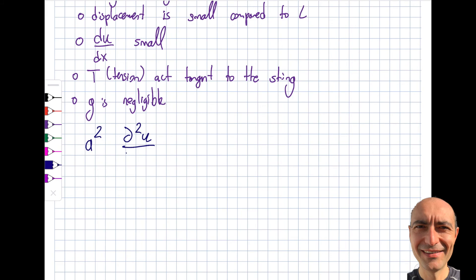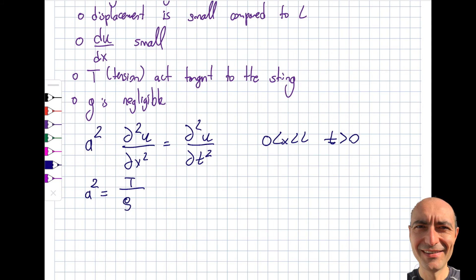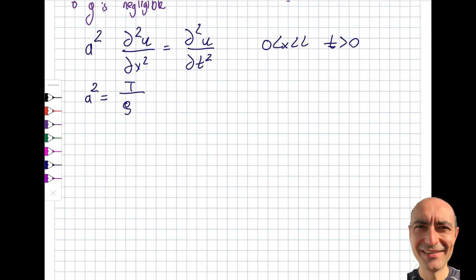With these constraints, the partial differential equation I get is the wave equation, defined for x from 0 to L and t greater than zero. Here a² equals T over density (tension divided by density), so a is the speed of sound in the particular material. Since the equation is second order in space, I need two boundary conditions. Since it's also second order in time, I need two initial conditions.